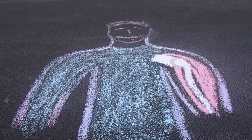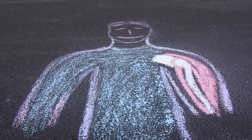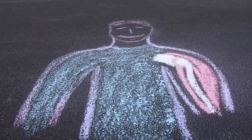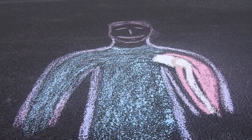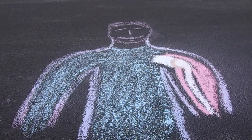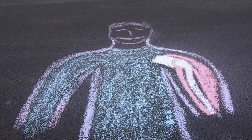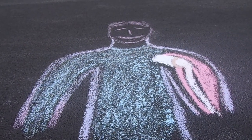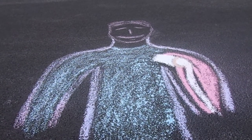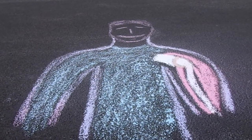Trabecular bone, also called spongy or cancellous bone, is formed by a network of intersecting plates — trabeculae — which in turn form the supporting infrastructure of bone. With its greater surface area, trabecular bone is more metabolically active and thus more sensitive to changes in the biochemical milieu. The vertebrae are more than 66% trabecular bone, with the center of the vertebral body being about 95% trabecular bone.